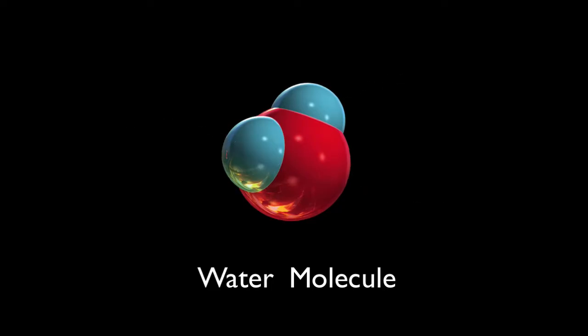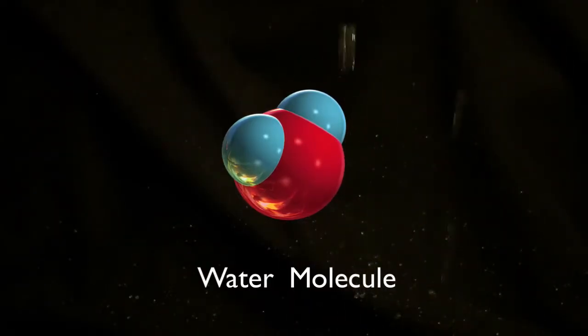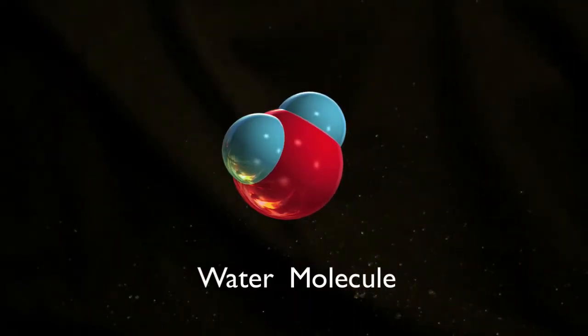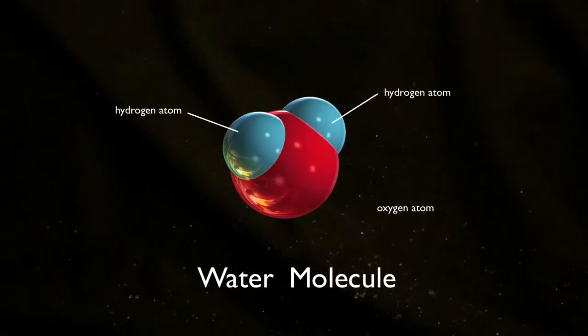This water molecule is the fundamental unit of the material you know to be water. Now you know why water is not listed in the periodic table, because it is not made of only one kind of atom.